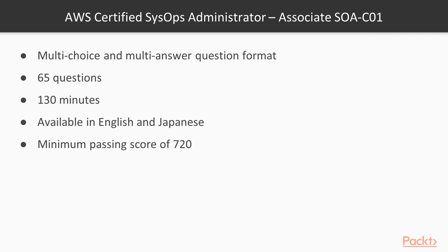The actual exam consists of multi-choice and multi-answer question formats. Multi-choice questions generally come with four answer options where you need to select one correct answer. In the multi-answer format, you might get five or six answer options and need to select two. You have 65 questions and 130 minutes to complete the exam. The exam is available in English and Japanese, and the minimum passing score is 720 out of 1000.